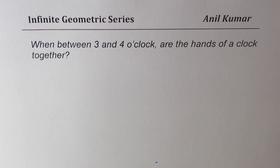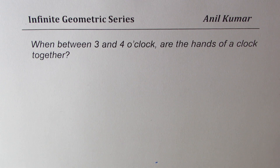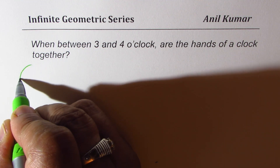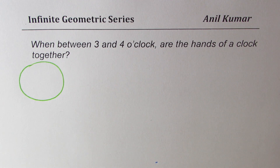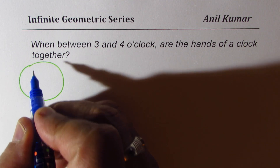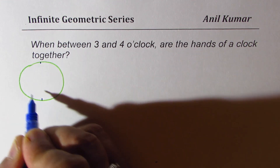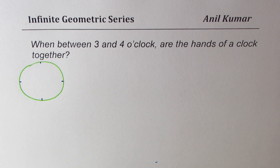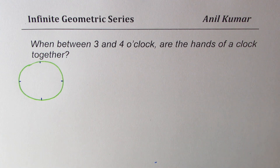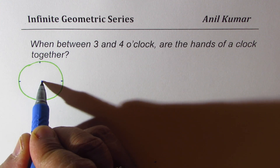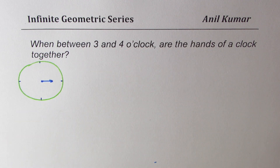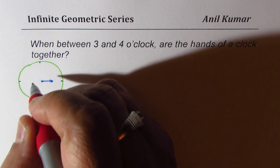I'm Anil Kumar sharing with you a very important application of infinite geometric series. The question is: when between 3 and 4 o'clock are the hands of a clock together? Let's try to understand this situation. We have a clock — at 3 o'clock the hour arm is at 3 and the minutes arm is at 12.